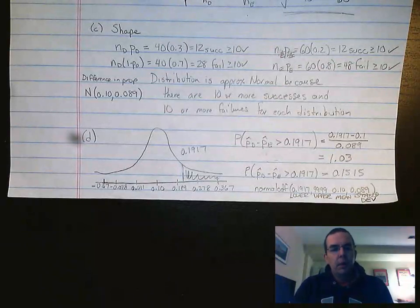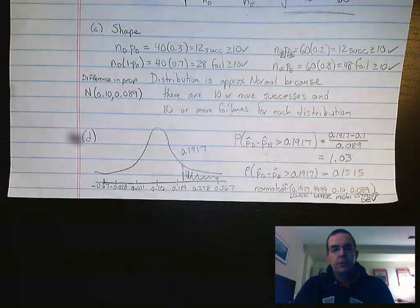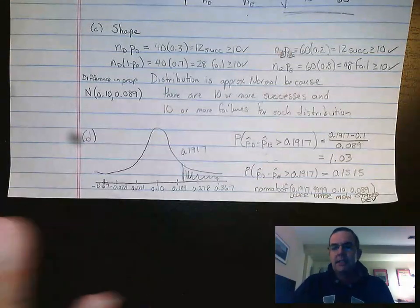We've covered center. We've covered spread. Now for part C of this question, we're going to do shape. And since we're dealing with proportions, this is all about successes and failures.